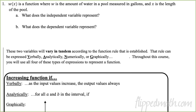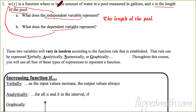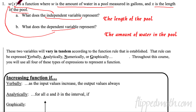Let's practice with number one. W of X is a function where W is the amount of water in a pool measured in gallons and X is the length of the pool. What does the independent variable represent? The independent variable is the input, which is X — so it represents the length of the pool. The dependent variable is W, which is the amount of water in the pool measured in gallons. The independent variable is inside the parentheses and the dependent is outside.